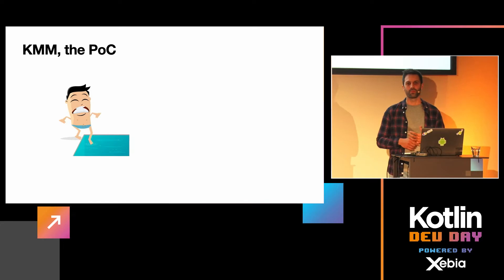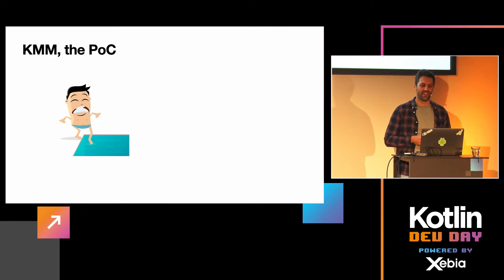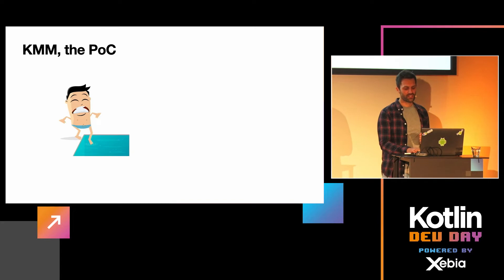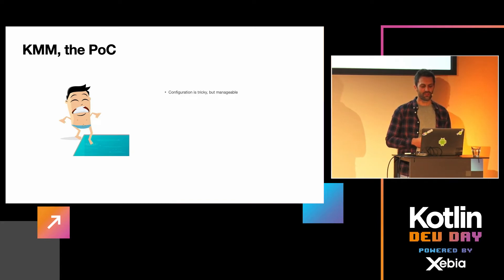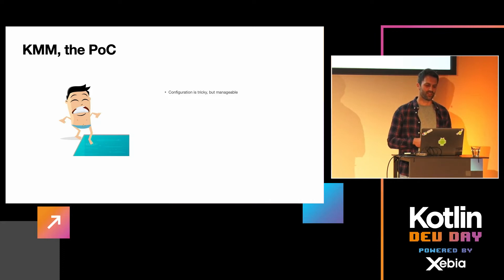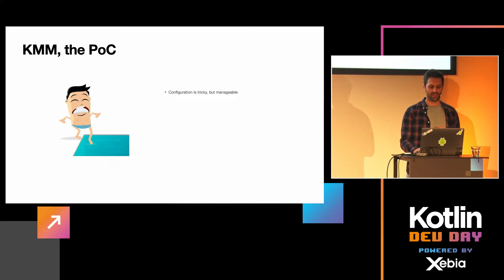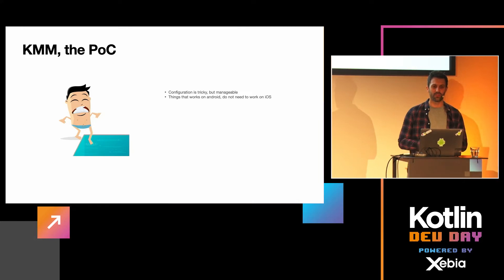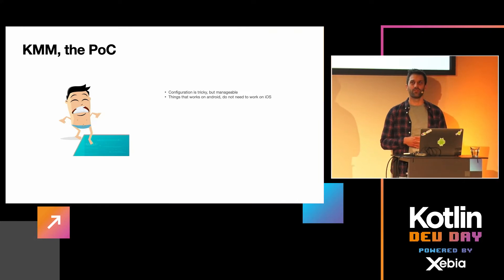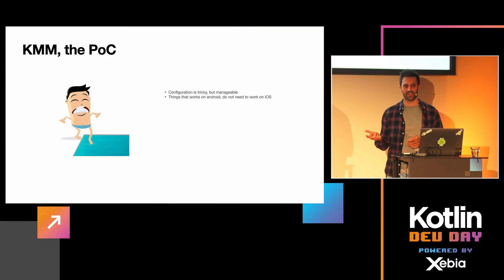Before we jumped into production, we started with a proof of concept. Here are our lessons learned: configuration is tricky but manageable. As you know, Gradle configuration can be tricky, and KMM is no exception to that. Things that work on Android do not necessarily work on iOS — this is something very important to keep in mind during development.